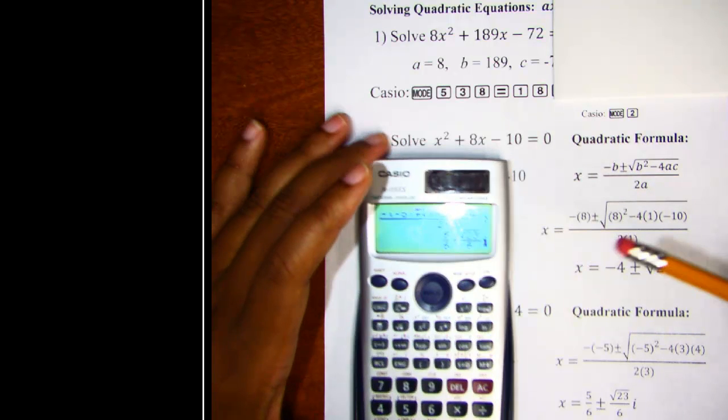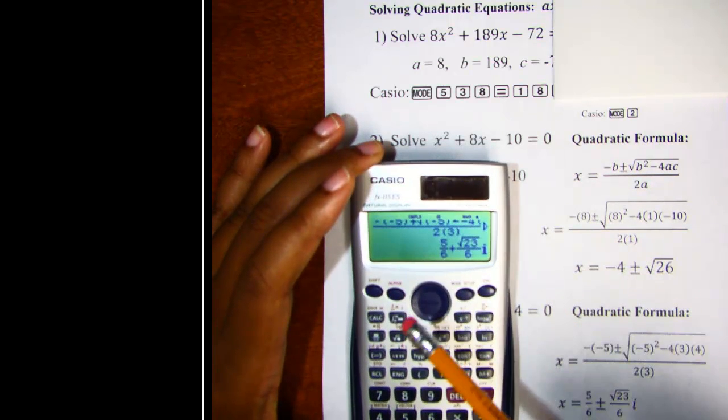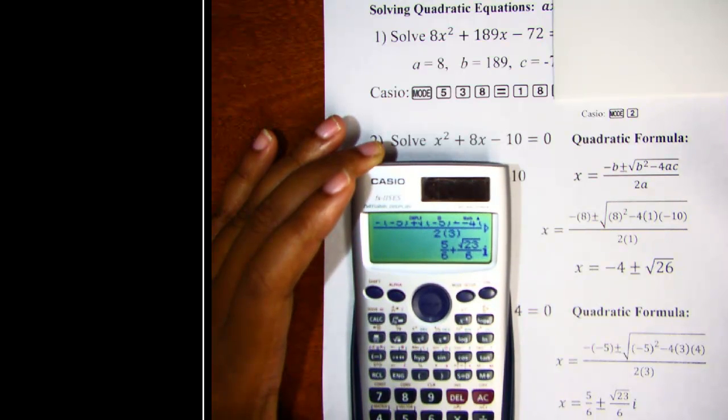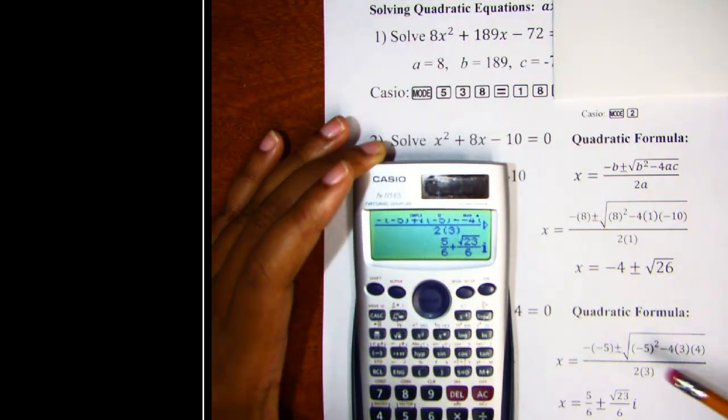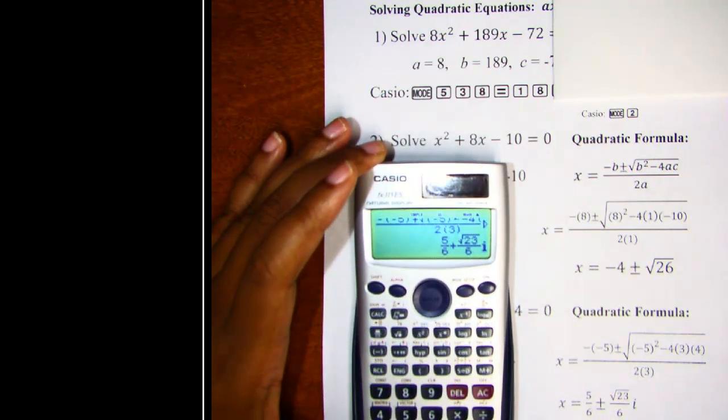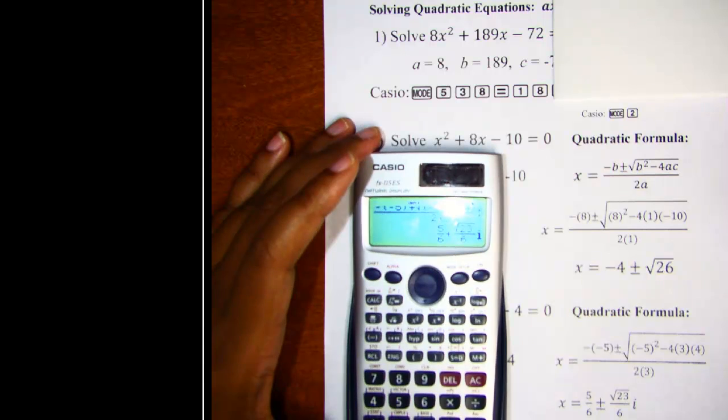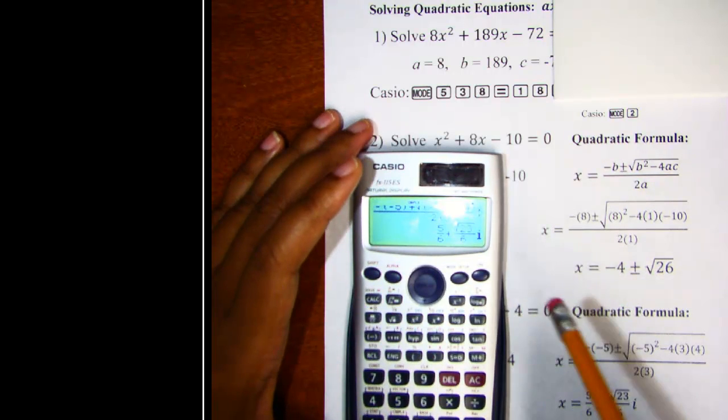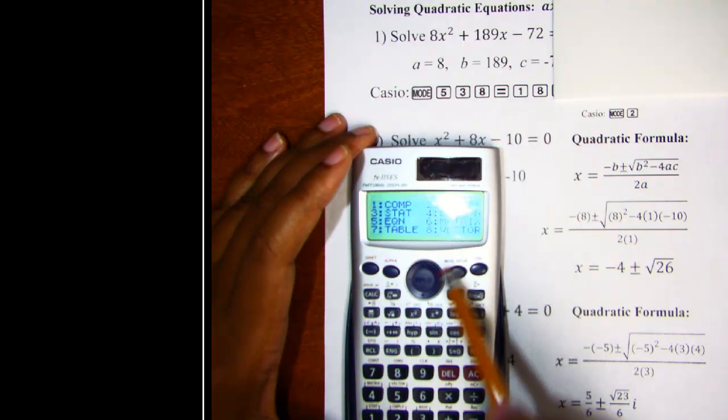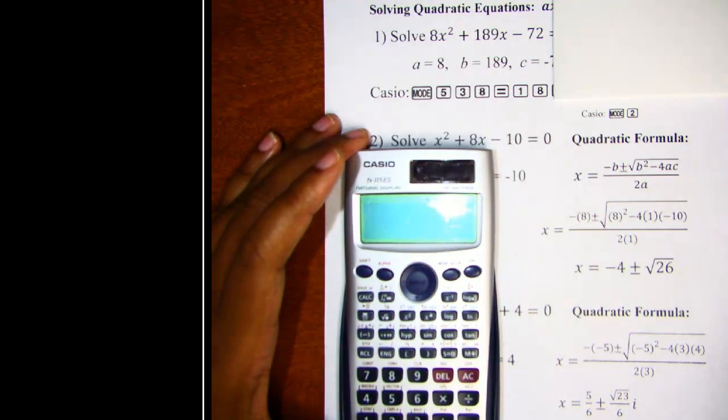It equals. And we see the Casio gives us five sixths plus the square root of twenty-three over six I. Which is one of the solutions we have down here. So just remember to enter in your plus or minus symbol so that you'll get both solutions. All right. So to get back to a normal screen remember select mode one. We'll see you next time.